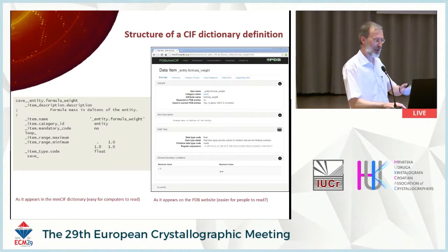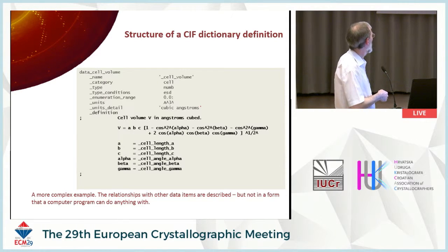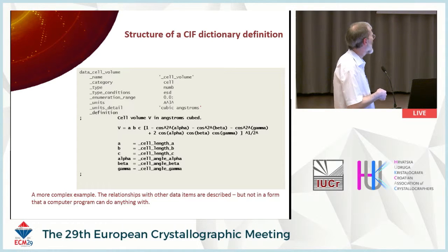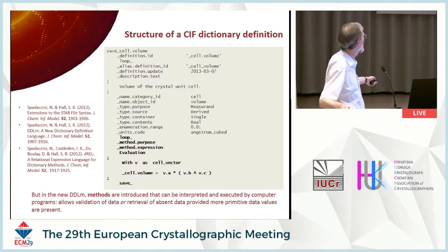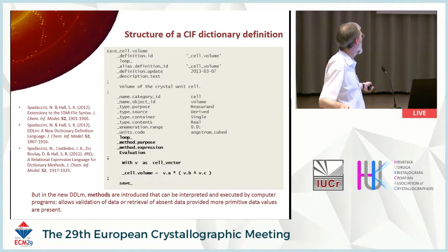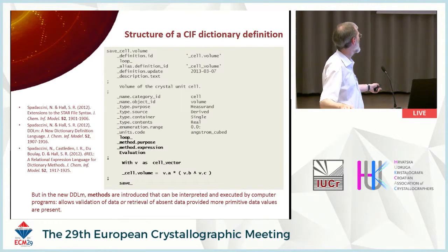Just some pictures of what a CIF dictionary definition looked like. Notice that in some cases we began by expressing the relationship between the item you're considering — say, cell volume — and other items in the file in a purely textual representation. This was for the benefit of programmers who would read the CIF dictionary and transcribe that into whatever code they were using. The development of DDLM and D-REL means you can encode the same type of information in a language directly interpretable by an appropriate interpreter — so you can write software that reads the dictionary and evaluates a volume.